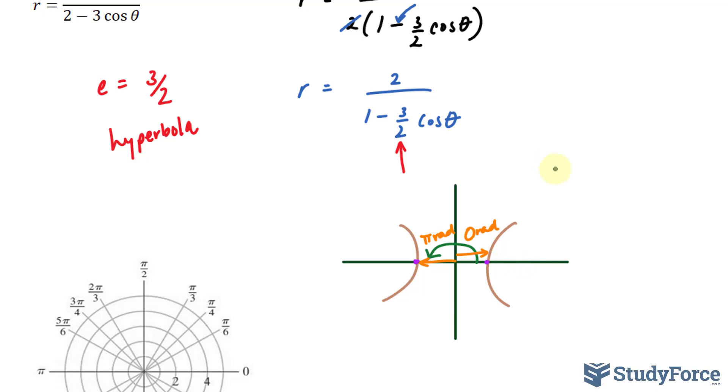As a result, to find the vertices, what you have to do is set theta equal to zero radians and theta equal to pi radians. Let's go ahead and do that. Let's substitute these numbers into this equation.